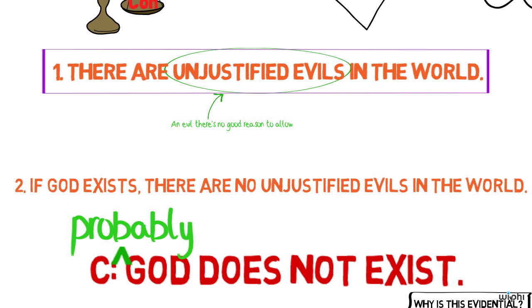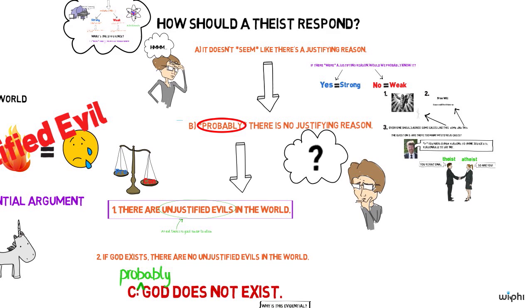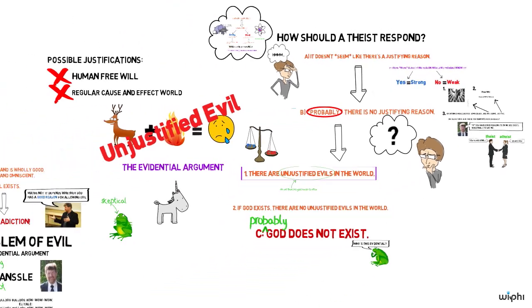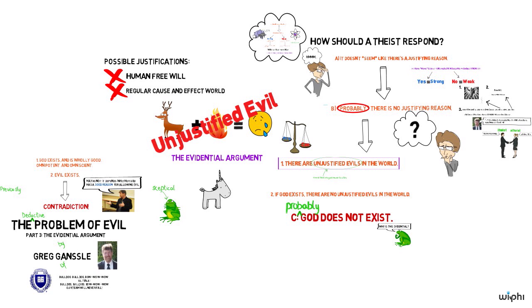So we've looked at the evidential argument from evil, simply one version of it by William Rowe, and I've explained how a theist can respond to see whether it's still reasonable to believe in God. Of course, many philosophers have launched different versions of this argument which are more complicated and perhaps more difficult to answer.